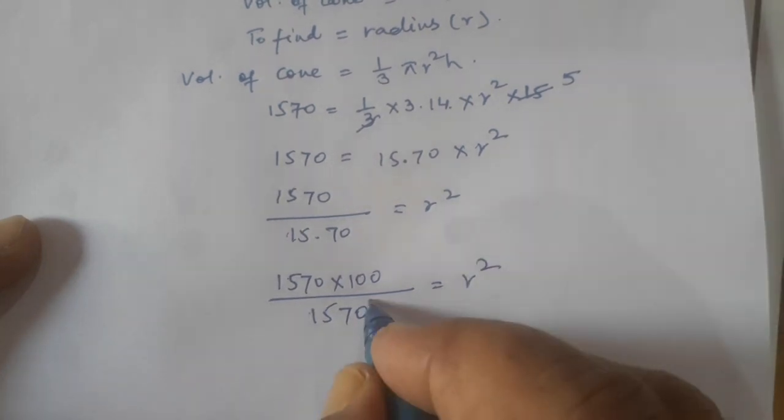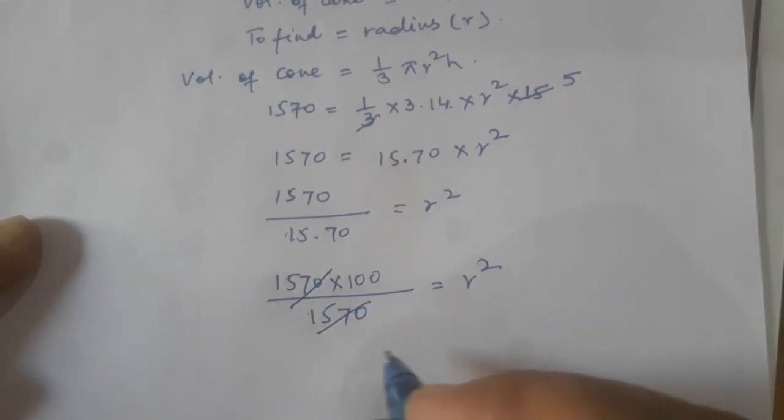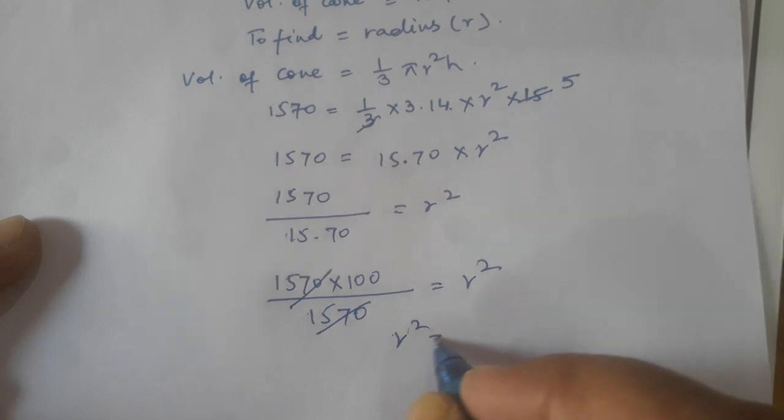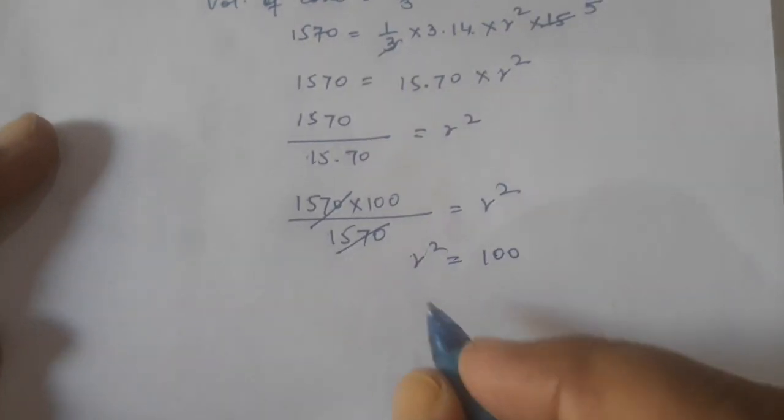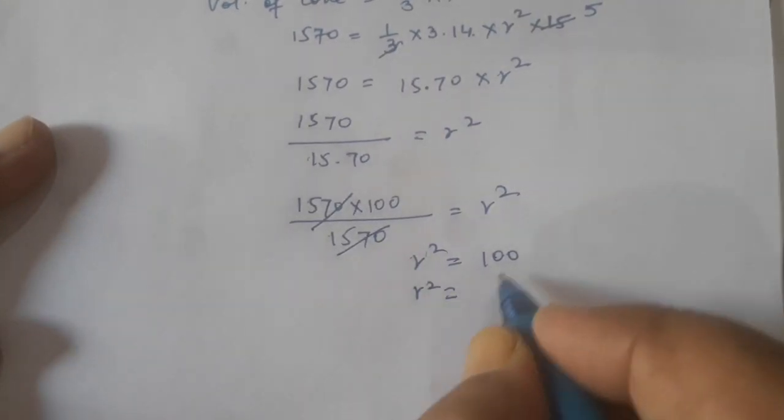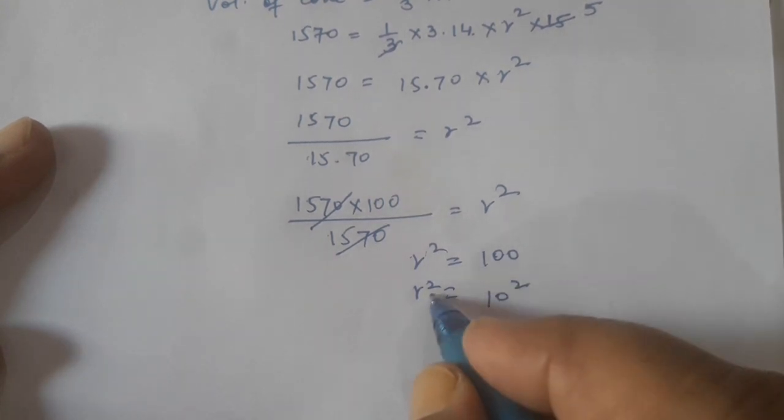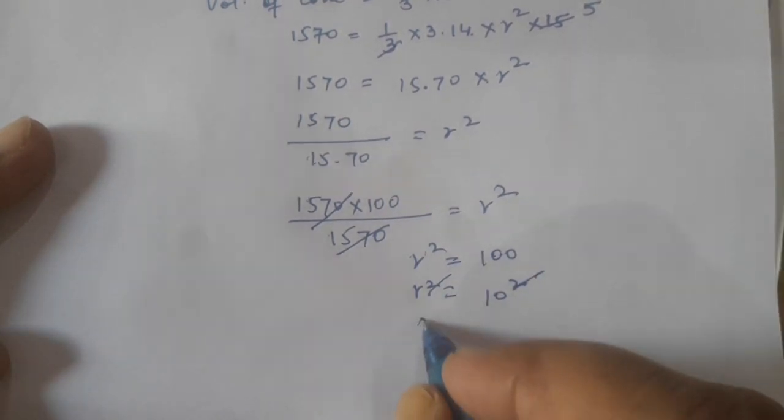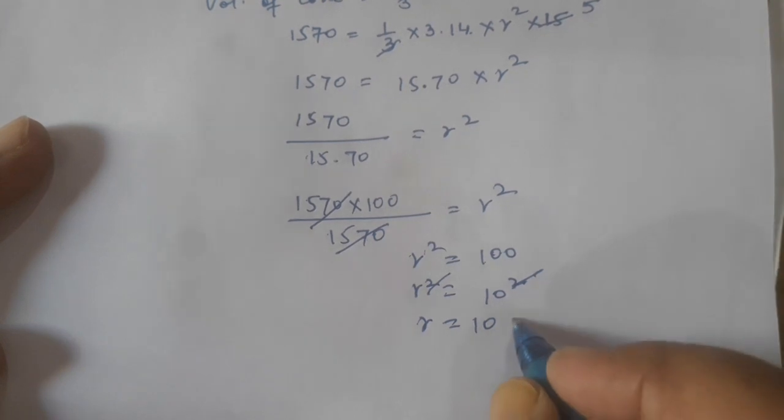So r² equals 100. What is this? 10 squared. So square cancels with square, r = 10 cm.